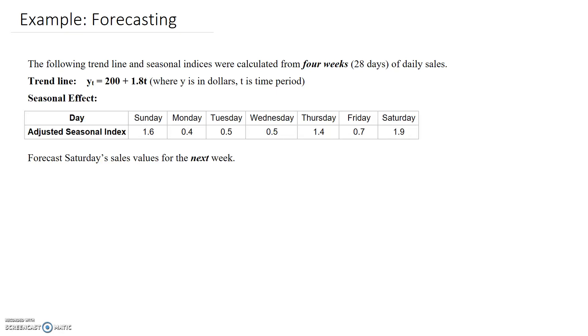The following trendline and seasonal indices were calculated from four weeks of daily sales. The trendline is given by this equation where y is in dollars and t is the time period, and the seasonal effect is broken down by day of the week. We need to forecast Saturday's sales values for the next week.